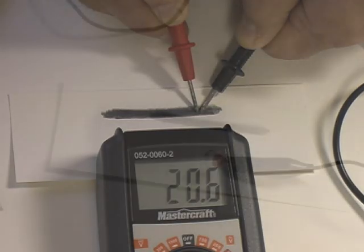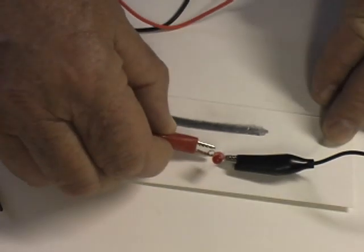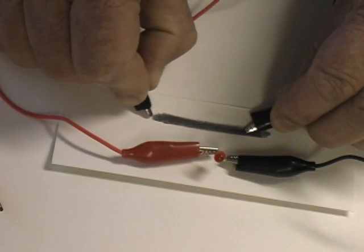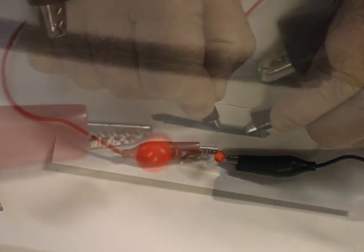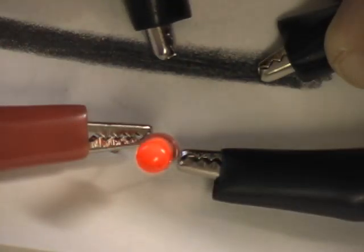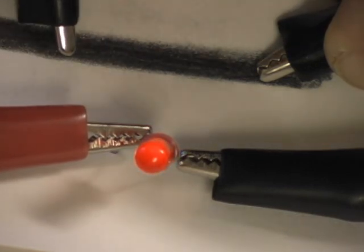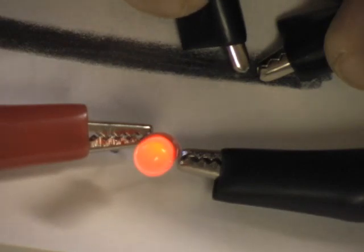Using this pencil lead resistor in a circuit with a battery and LED, we can see the effect. Sliding the contacts controls the brightness of the LED. If you try this, be sure to use a suitable current and low voltage source for the LED. Excessive current could damage the LED.